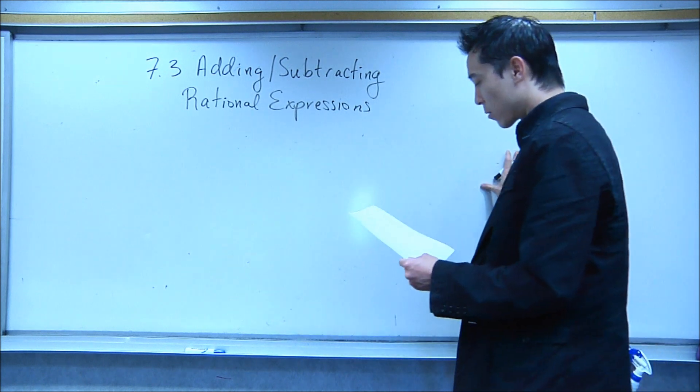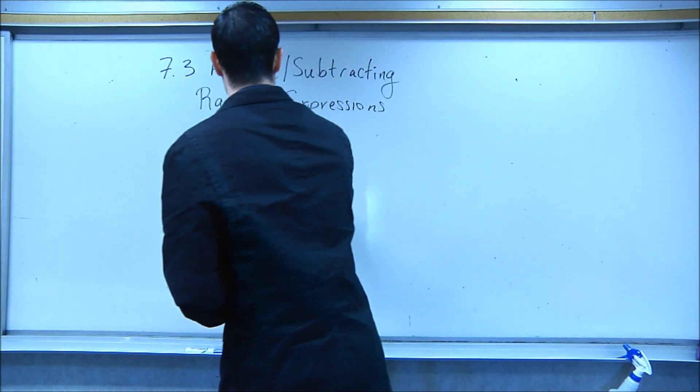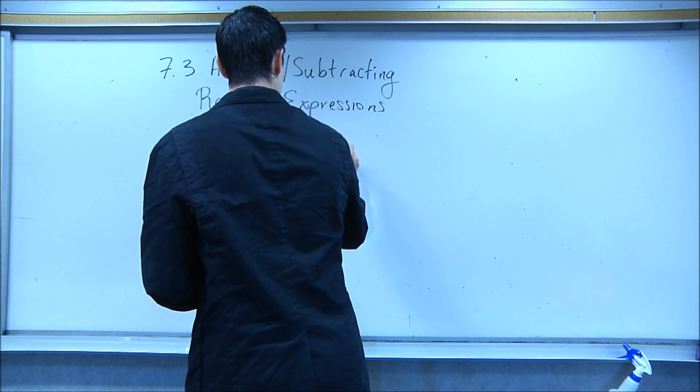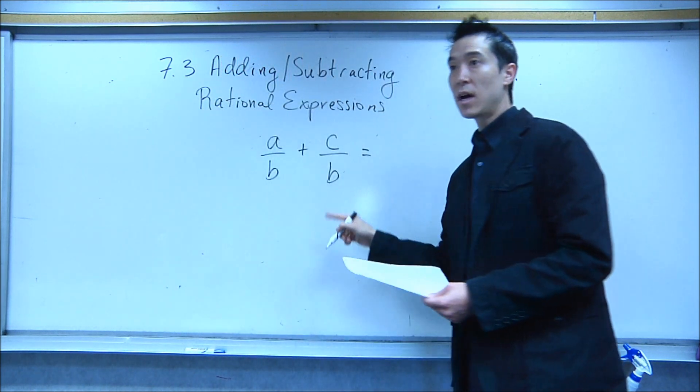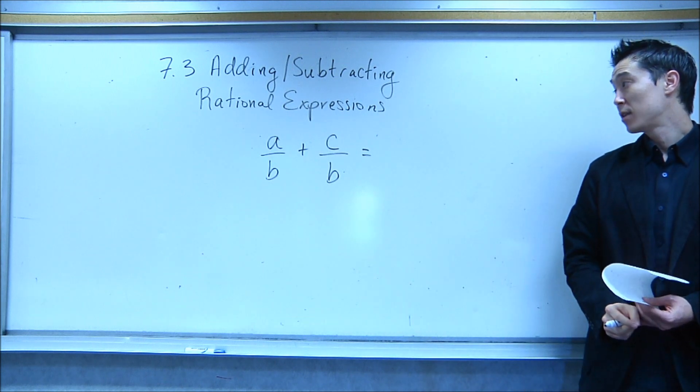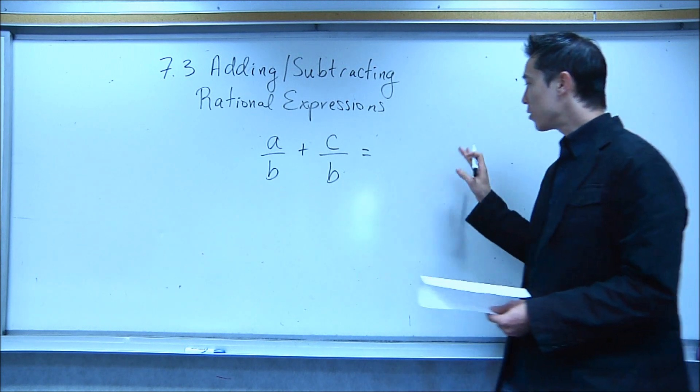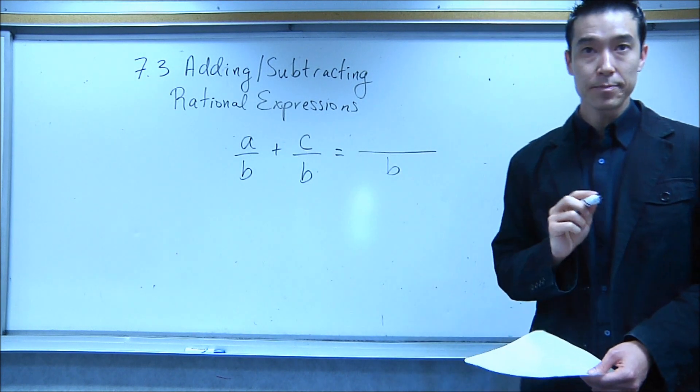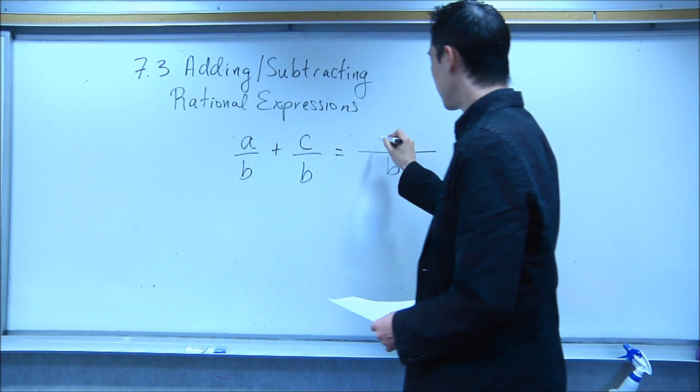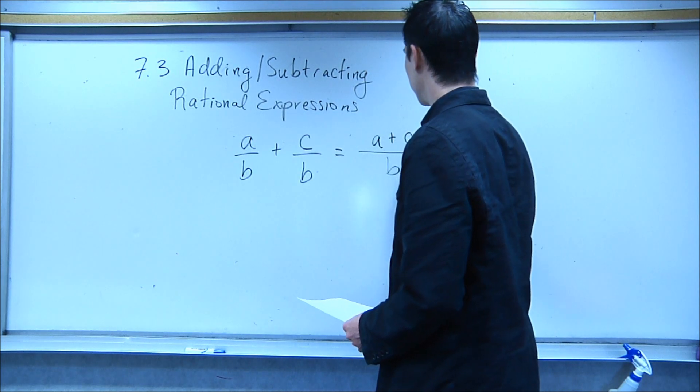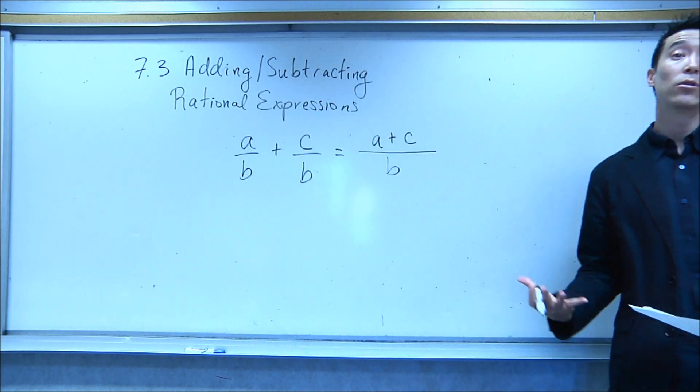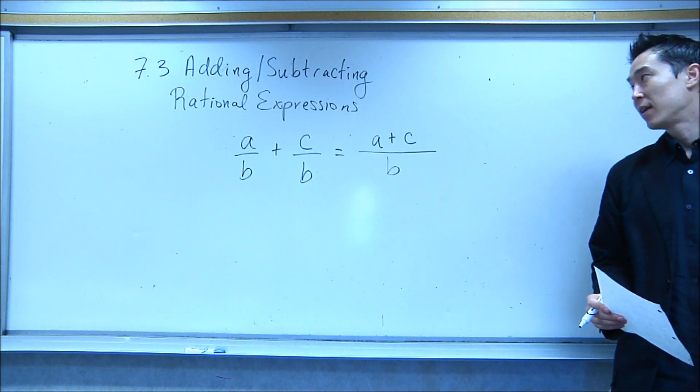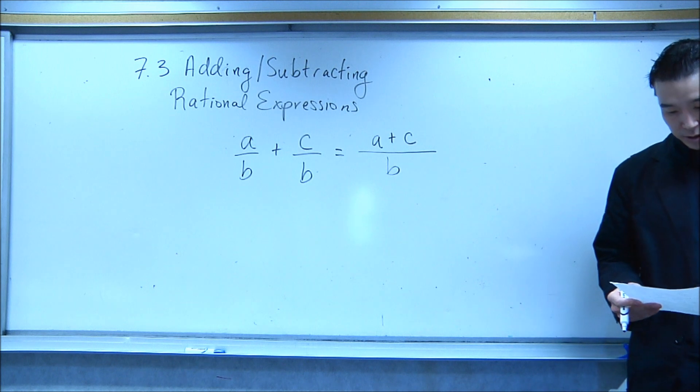Here's our overall rule. If I'm adding, if I have a fraction a over b plus, let's say, c over b, if they have the same denominator, which they will all have in this section, all you have to do is combine this to a single fraction, keep that denominator, and then just simply add the top, a plus c. This is my rule for adding two fractions with the same denominator. And again, rational expressions are just fractions.